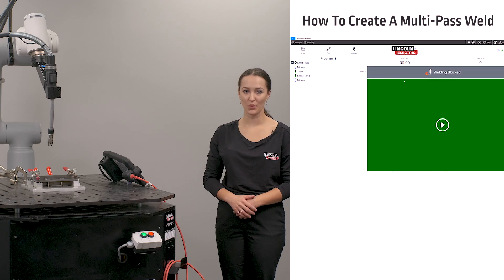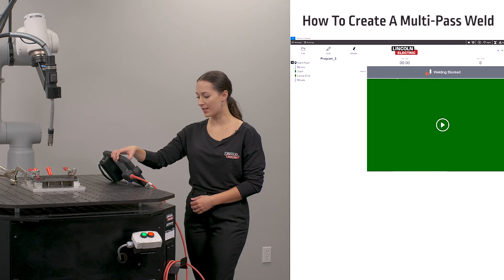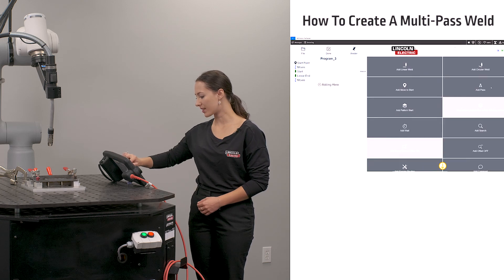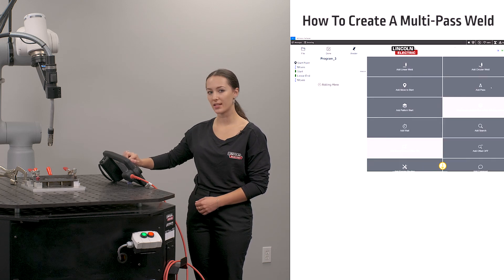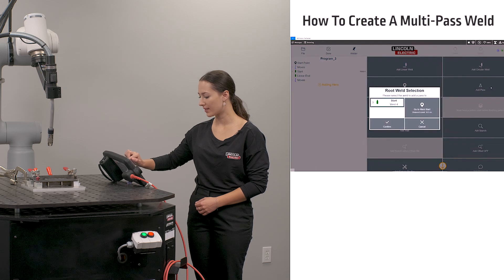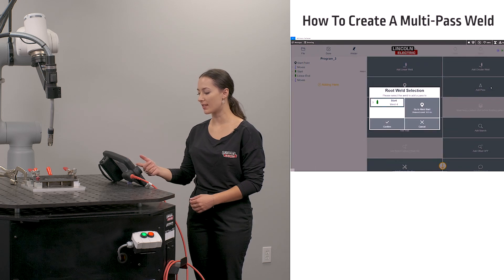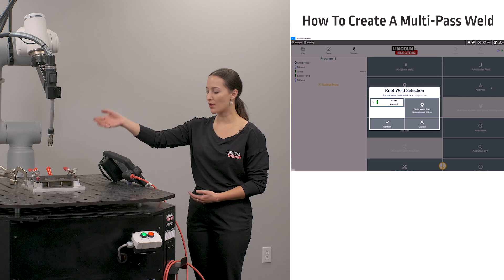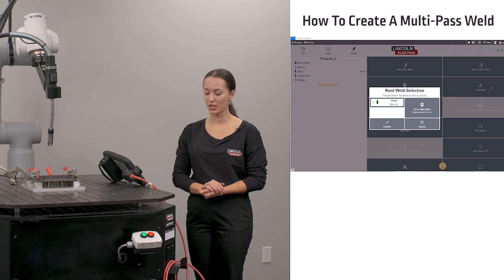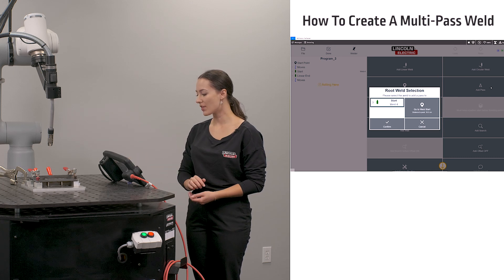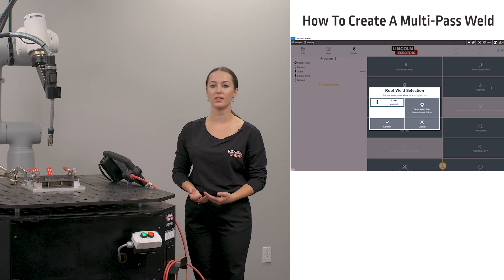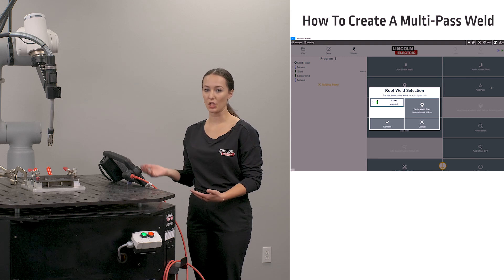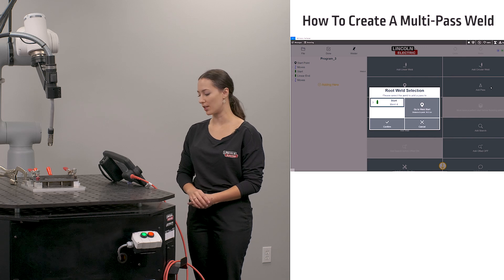Once my root pass has been welded, I'm going to go back into edit mode and from our selection of choices, I'm going to select add pass. It is going to give me a selection for my root weld. In this case, I'm going to select the weld that I just created, and I have the option to click go to weld start on any of the available root passes to determine which root pass I would like to use.